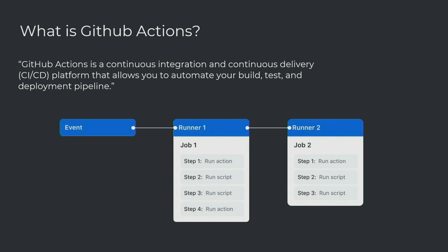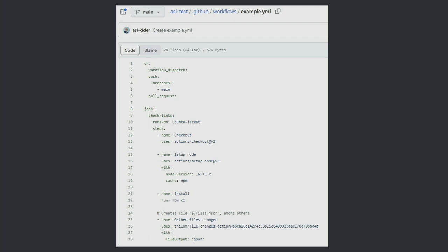What is an action? An action is basically a code package that allows you to use someone else's library to execute some stuff in your pipeline. For example, you want to check out the code from the repository to the runner itself - you don't want to develop it yourself, someone else probably already developed it. So you can use an action that checks out your code from the repository to the runner itself.